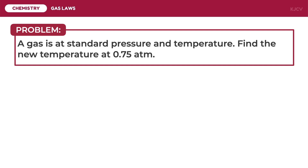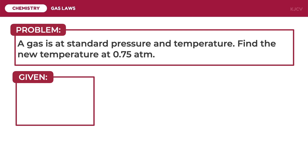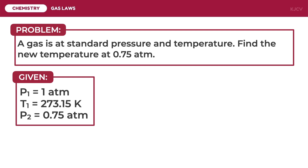For the last problem: a gas is at standard pressure and temperature. Find the new temperature at 0.75 atmosphere. The gas is initially at standard pressure, which is 1 atmosphere — this is the initial pressure. The standard temperature is 273.15 Kelvin, which is the initial temperature. The pressure was then changed to 0.75 atmosphere, making it the final pressure. We are asked to solve for the final temperature.